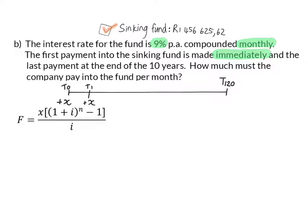We know that the future value of this account should be R1,456,625.62. We want to calculate the monthly payment. The account will receive interest of 9% that is compounded monthly and we will have 121 payments in this period because we've already mentioned that there's 120 months but there's an extra payment because they start immediately. Then this will be divided by the interest rate compounded monthly.